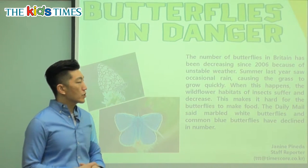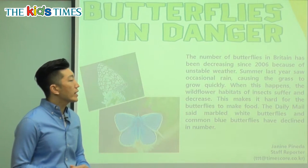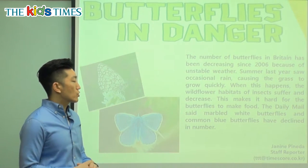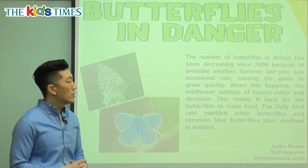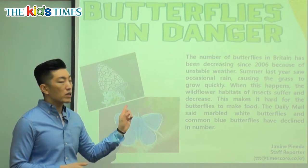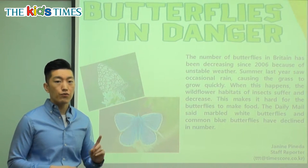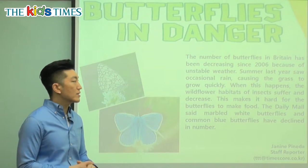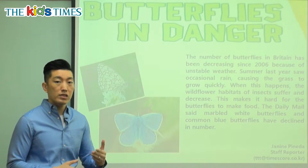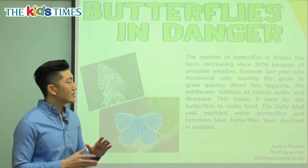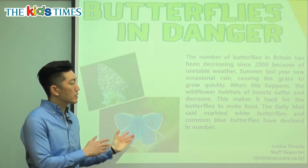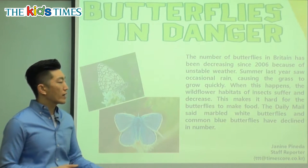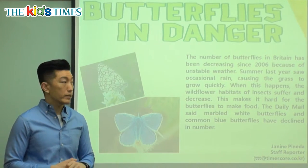Summer last year saw occasional rain, causing the grass to grow quickly. So last summer they saw occasional rain — from time to time. They don't see it often, not a lot, just from time to time. Because of the occasional rain, it caused the grass to grow quickly.